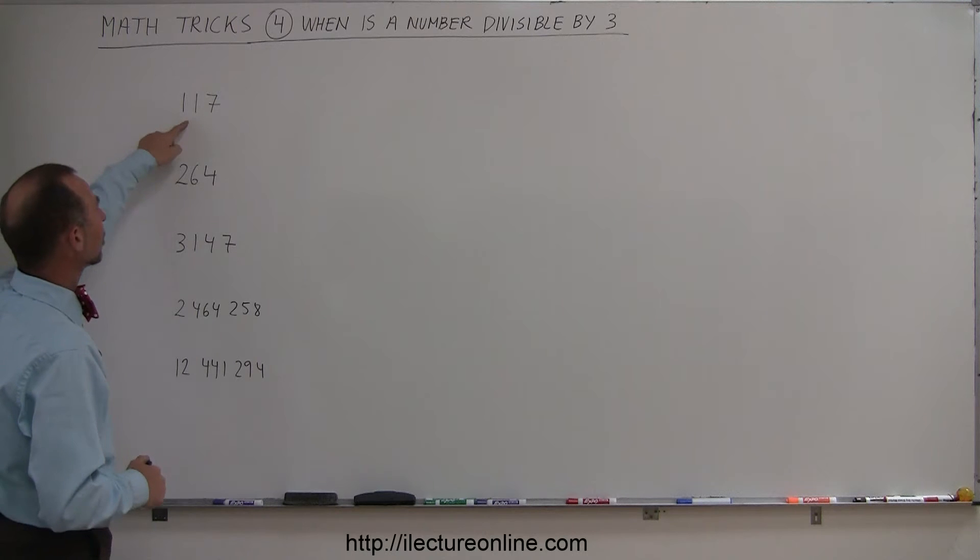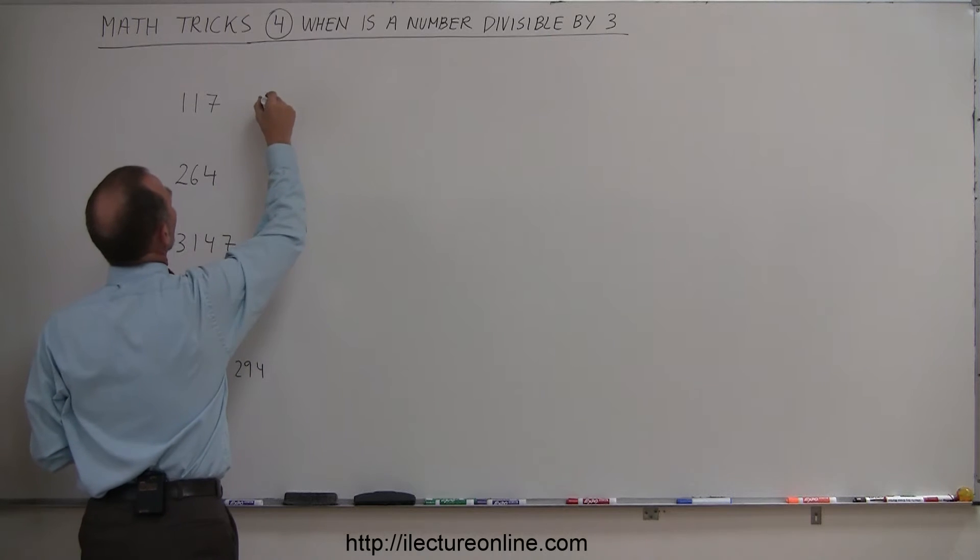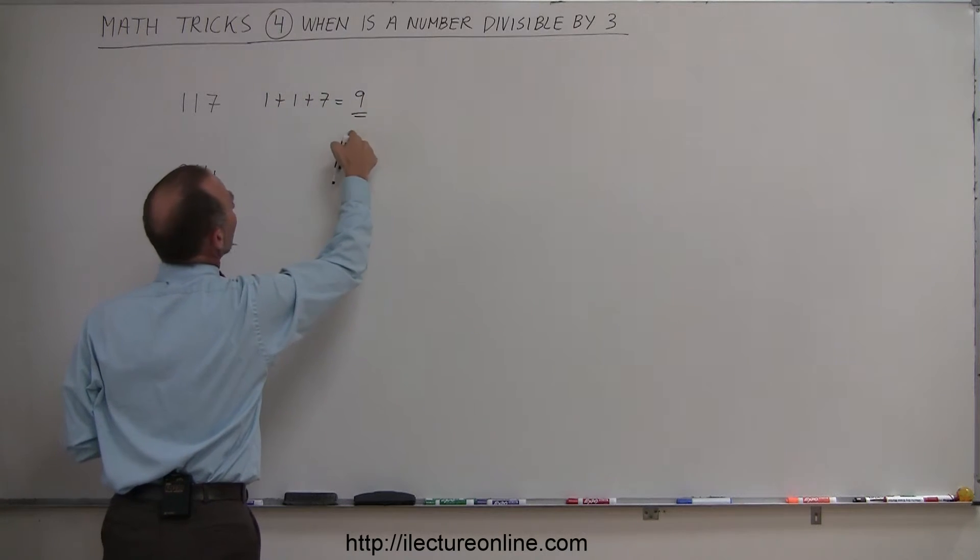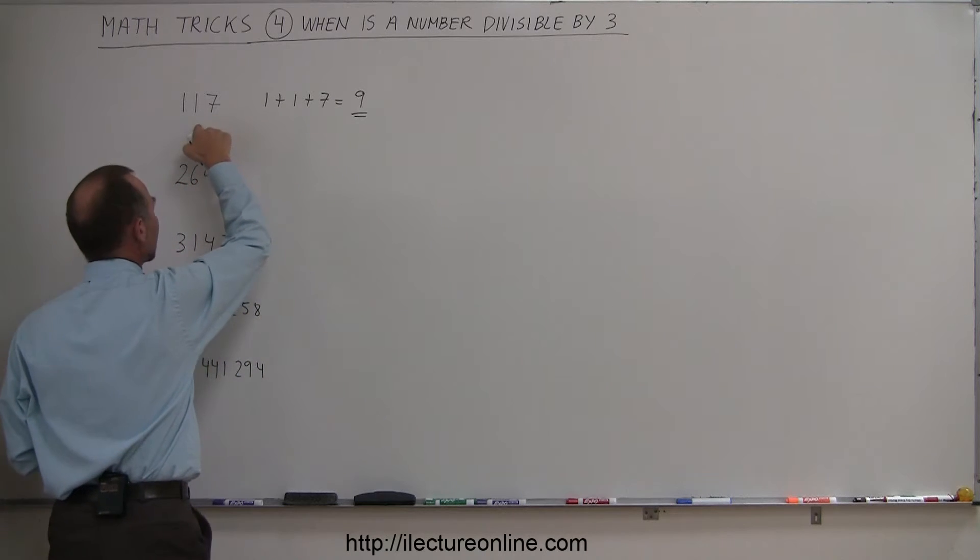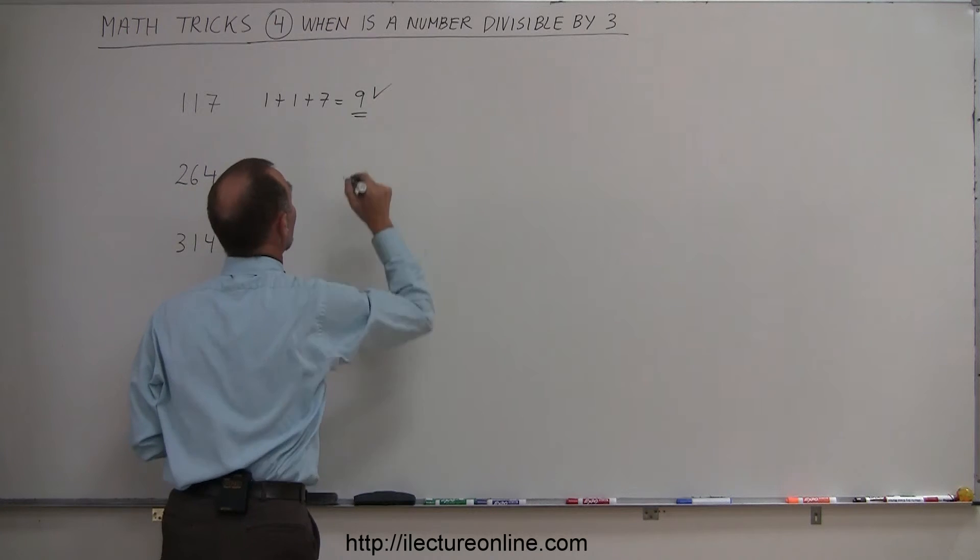The way you do that is to take a look at a number and add up all the numbers together. So we have 1 plus 1 plus 7. That equals 9. If this number is divisible by 3, this number is divisible by 3, since 9 is divisible by 3. That checks off.